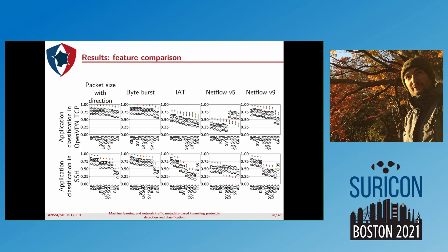Looking at application classification inside OpenVPN and SSH: AIT, NetFlow V5, and NetFlow V9 results are even worse than before. Overall, we consider that packet size with direction and byte burst are the best features, and those are the features we use to obtain a performance lower bound for the whole system.